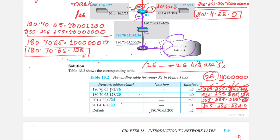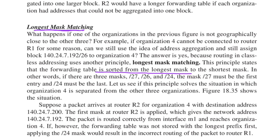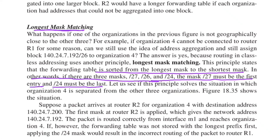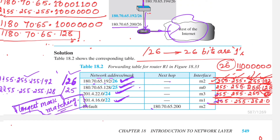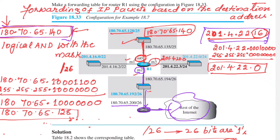Remember: if the mask is not given in slash notation like /26, it will be given in dotted decimal as 255.255.255.192. If /25 is not mentioned, it will be 255.255.255.128. The forwarding table is always sorted from the longest mask to the shortest. For example, if masks /27, /26, and /24 are present, /27 is the first entry and /24 is the last, applying the longest prefix matching concept. That covers forwarding of IP packets based on destination address. Hope you find this session useful — please like, share, and subscribe.